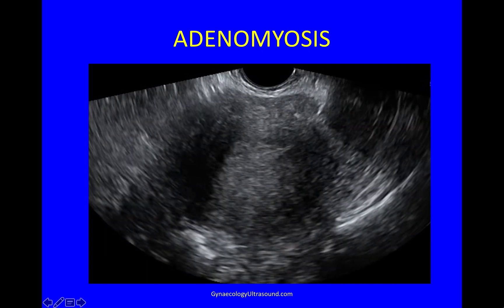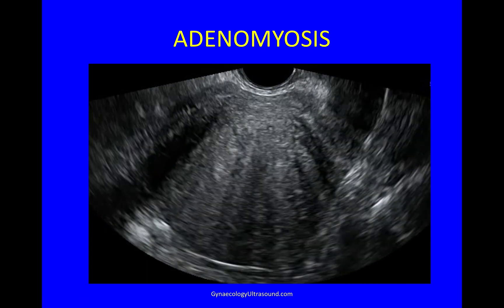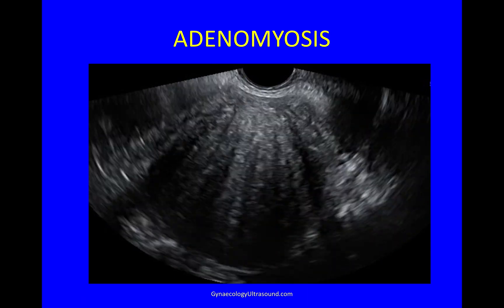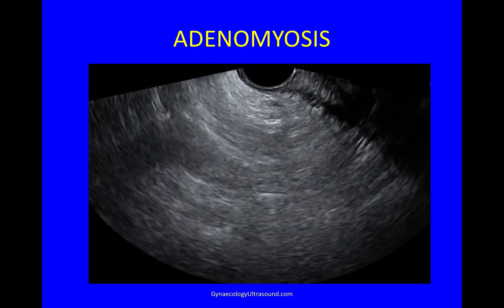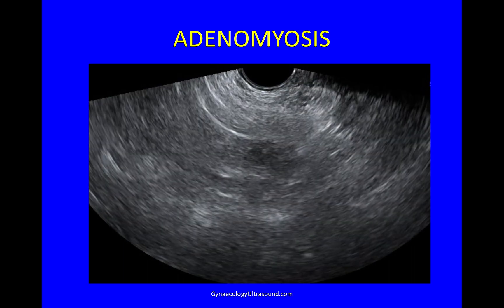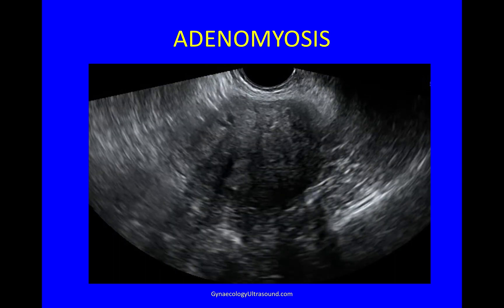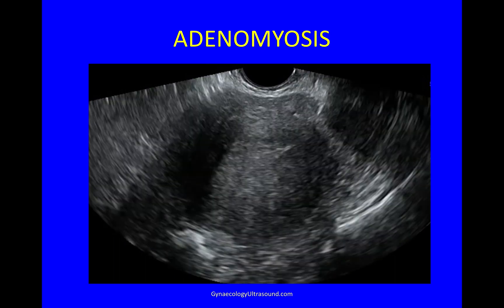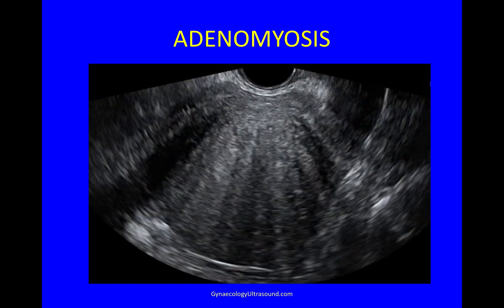In this video, you can see a uterus with adenomyosis. You can see that it's bulky, it's globular, there's an indistinct endomyometrial junction and there's stripy shadowing, a little bit like a Venetian blind.